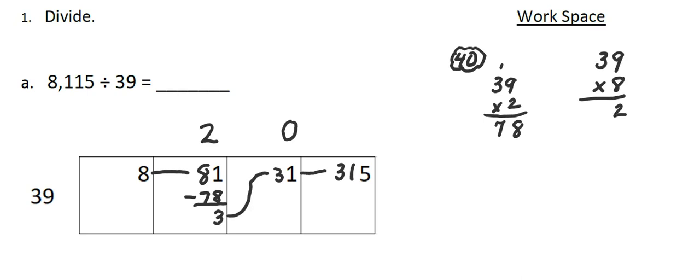So 8 times 9 is 72. 8 times 3 is 24 plus 7 is 31 and that works. So we will subtract 312 gives me 3 and that was 8 groups. So I have a remainder 3. So 8,115 divided by 39 is 208 remainder 3.